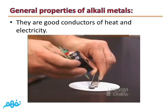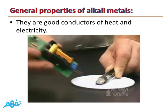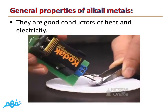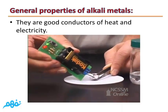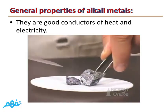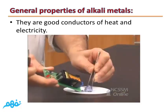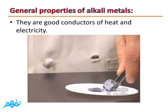Properties of alkali metals: The first property is they are good conductors of heat and electricity. So all elements of Group 1A are good conductors of heat and electricity.